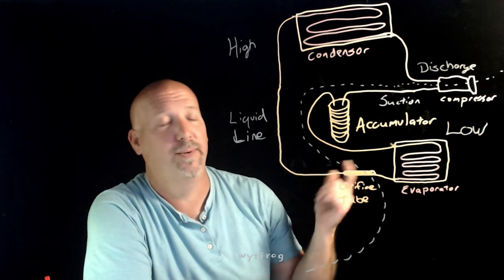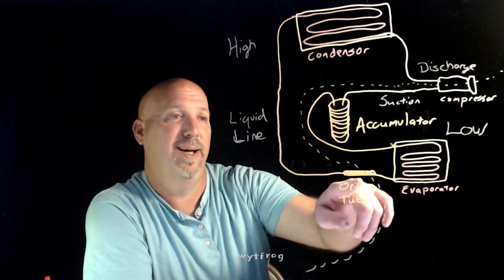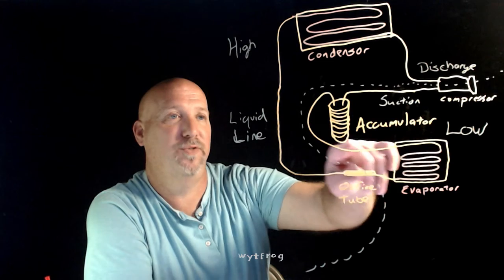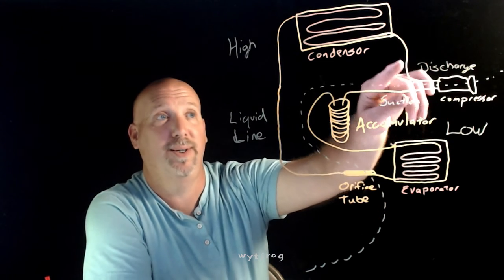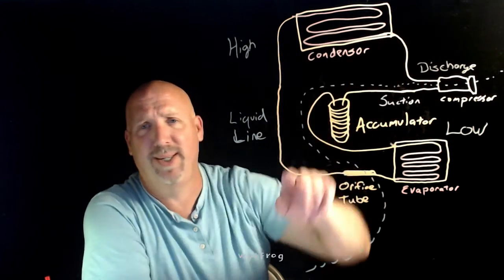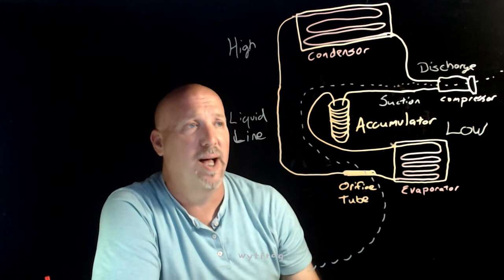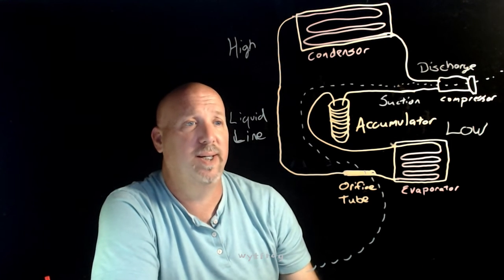High pressure vapor, high pressure liquid, low pressure liquid, low pressure vapor, low pressure vapor, high pressure vapor, high pressure liquid. And the cycle just continues. And that's basically an orifice tube system.